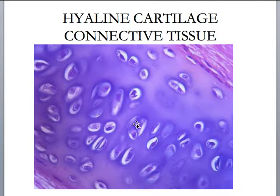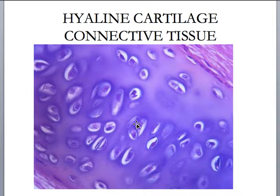Hyaline cartilage in the trachea — your windpipe. The organ directly behind your trachea is your esophagus, which has to be able to expand to great diameters to allow food to pass through to the stomach. Your trachea is right in front of your esophagus. Having this hyaline cartilage keeps the windpipe open and protective, but it also has some flexibility to it — very slight flexibility.